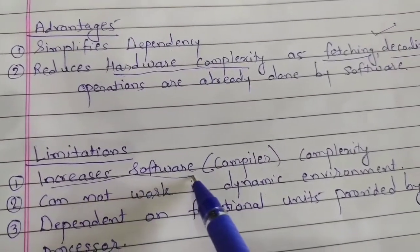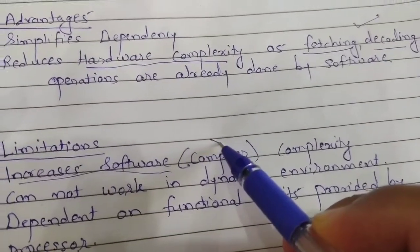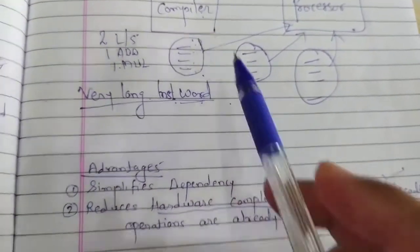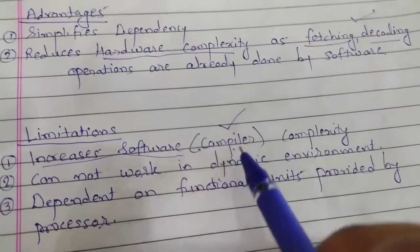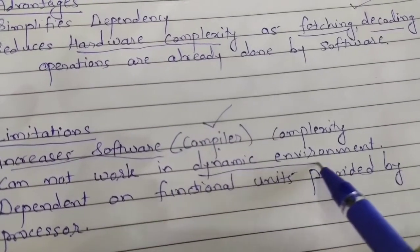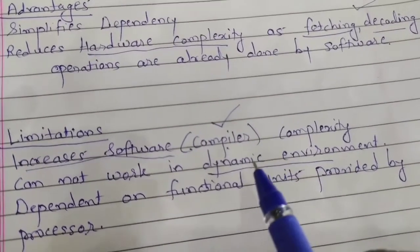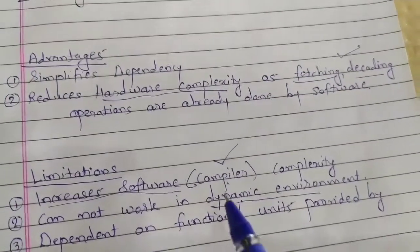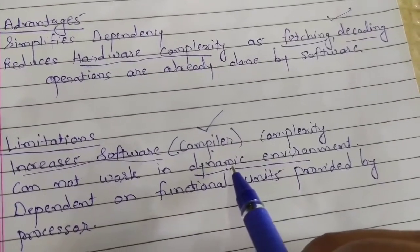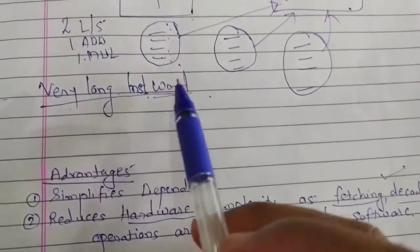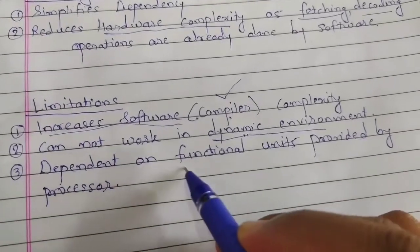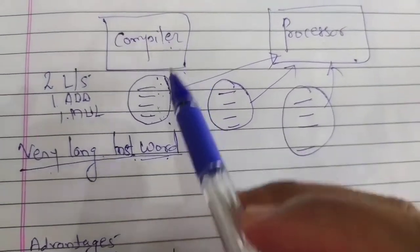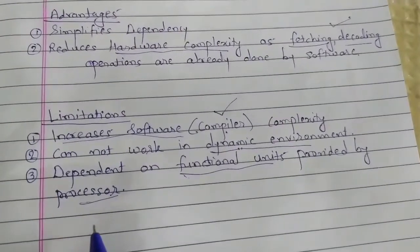Regarding limitations: it increases software complexity — specifically compiler complexity — as more optimizations are required for grouping operations, increasing the workload of the compiler. It also cannot work in a dynamic environment, because all instructions must be known in advance. If instructions or operations arrive dynamically, we cannot schedule them. So the compiler must know in advance what operations need to be performed in order to group them properly. Additionally, it is dependent on the functional units provided by the processor — the compiler must group operations based on what functional units are available.